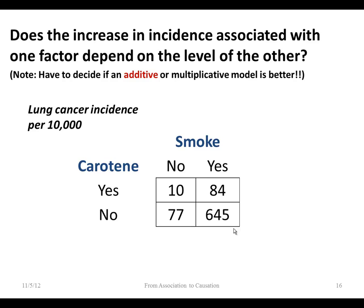I'll use an additive model here. Among those getting enough carotene, the difference in lung cancer incidence between smokers and non-smokers is about 74 cases per 10,000. Among those not getting enough carotene — the risk factor — the difference between non-smokers and smokers is 568 cases per 10,000. So: does the increase in incidence for one factor depend on the level of the other factor? Clearly yes. There is an interaction — an effect modifier between carotene intake and the effect of smoking on lung cancer incidence.